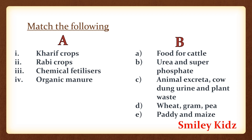Now let's match the following. Kharif crops — paddy and maize are examples of Kharif crops which grow in the rainy season, so let's write E. Rabi crops — examples are wheat, gram and pea, so let's write D. Chemical fertilizers — examples are urea and super phosphate, so let's write B. Organic manure — examples are animal excreta, cow dung, urine and plant waste, so let's write C.